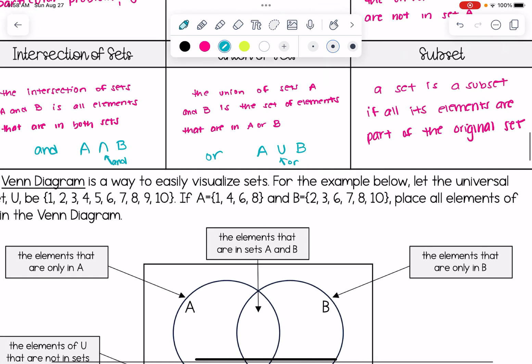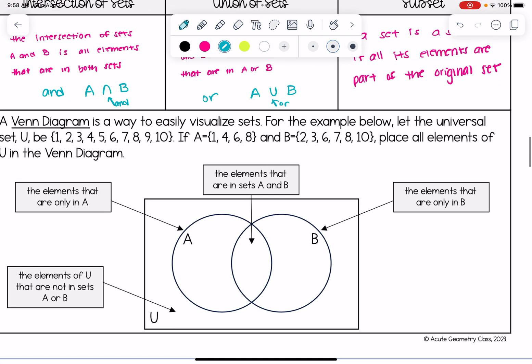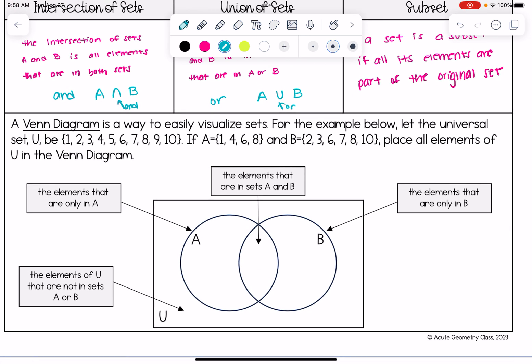You're also going to see this work with Venn diagrams. So a Venn diagram is a way to easily visualize sets. For the example below let the universal set U be one, two, three, four, five, six, seven, eight, nine, ten. So notice these are all of the elements in this problem. If set A has elements one, four, six, eight and set B has elements two, three, six, seven, eight, ten.